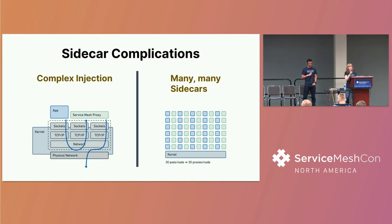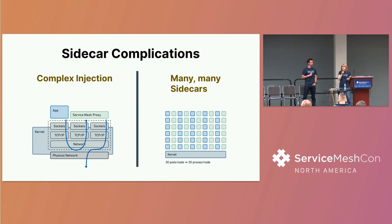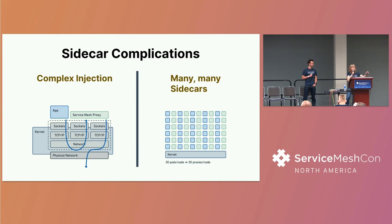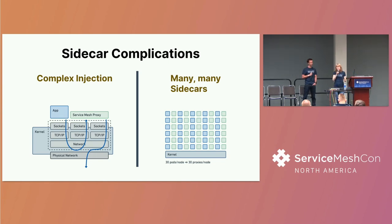But sidecars come with downsides. They're complex to operate, complex to inject, and have additional resource needs. They also require network packets to take a much more convoluted path through the stack. When we run in containers, our containers typically have their own network namespace. If we have the proxy running inside the network namespace for the pod, we've got to connect through that network stack twice before we even get as far as the host network — a lot of processing for packets before they've even left the pod.